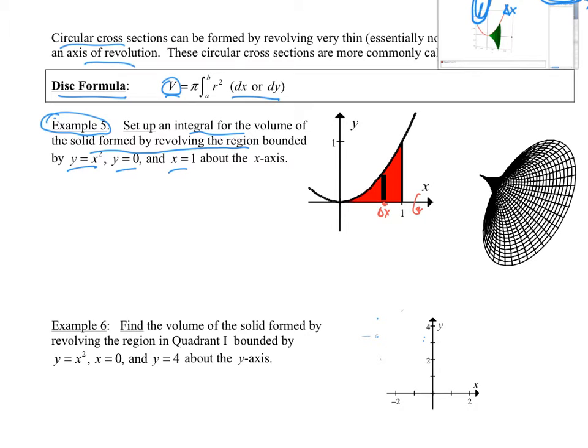So this distance right here would be my radius. Well that's going to change depending upon where I am on this interval from 0 to 1. But then that is dictated by this curve. And so that height, or that radius, is always going to be y equals x squared.